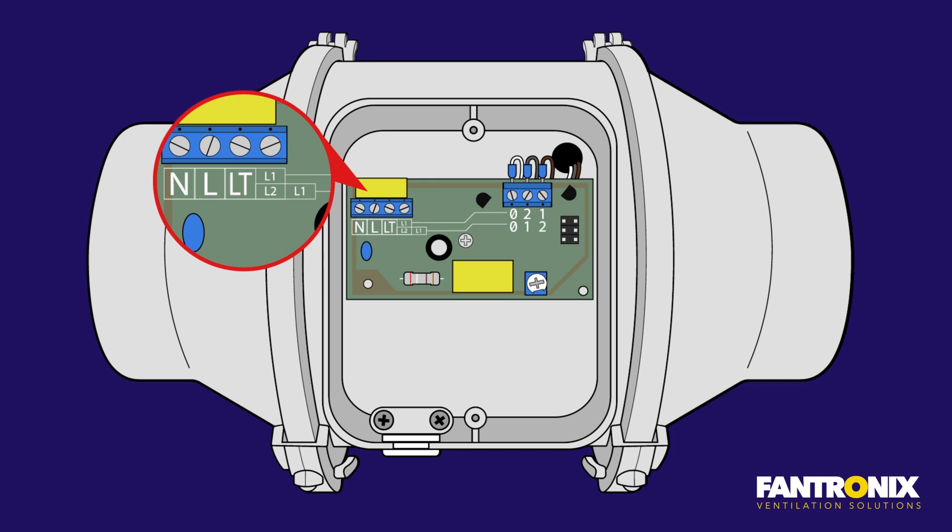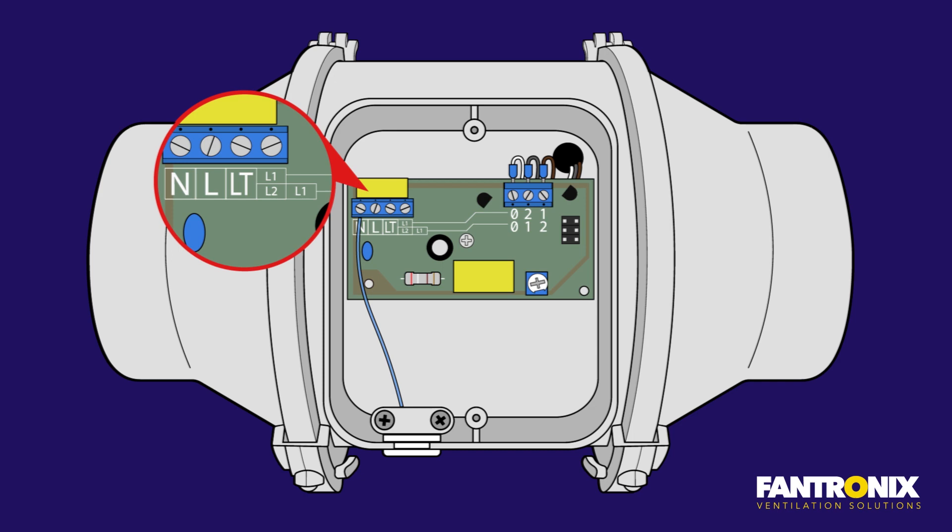N is your neutral connection, L is your permanent live connection and LT is your switch live connection. All three of these wires must be correctly inserted into the terminal block in order for the fan to function.